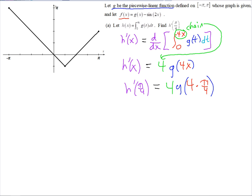Because again, the derivative of 4x is 4. Now we can substitute in π/4. And notice when you do that, the 4s cancel out. We're just left with g(π). So we've got the graph of g right here. So to find g(π), well that just represents the y value right here at π.